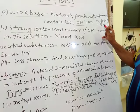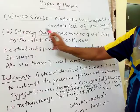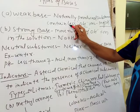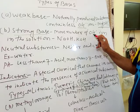Second, strong bases are those having more number of hydroxide ions in the solution. Examples are sodium hydroxide and potassium hydroxide.